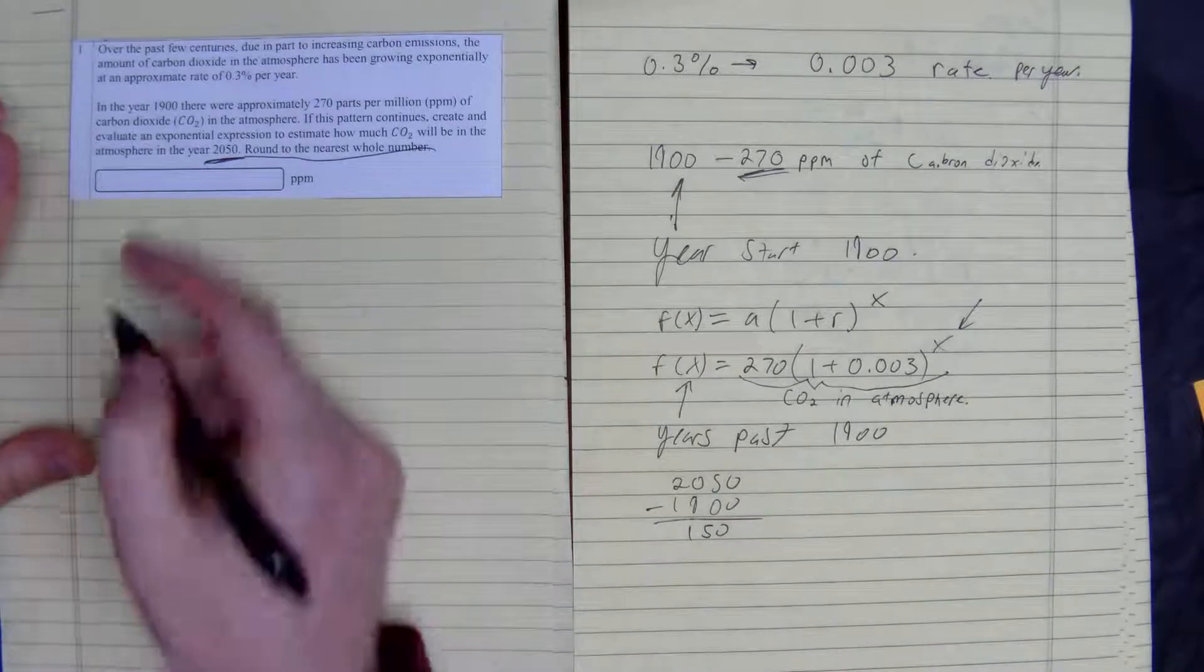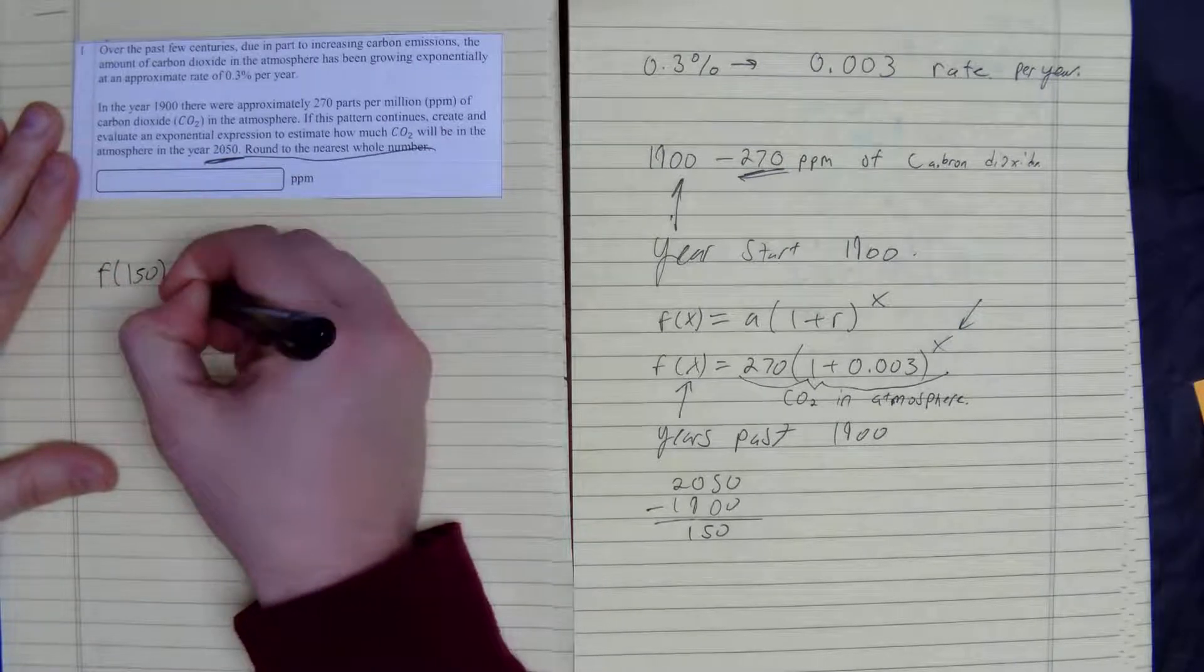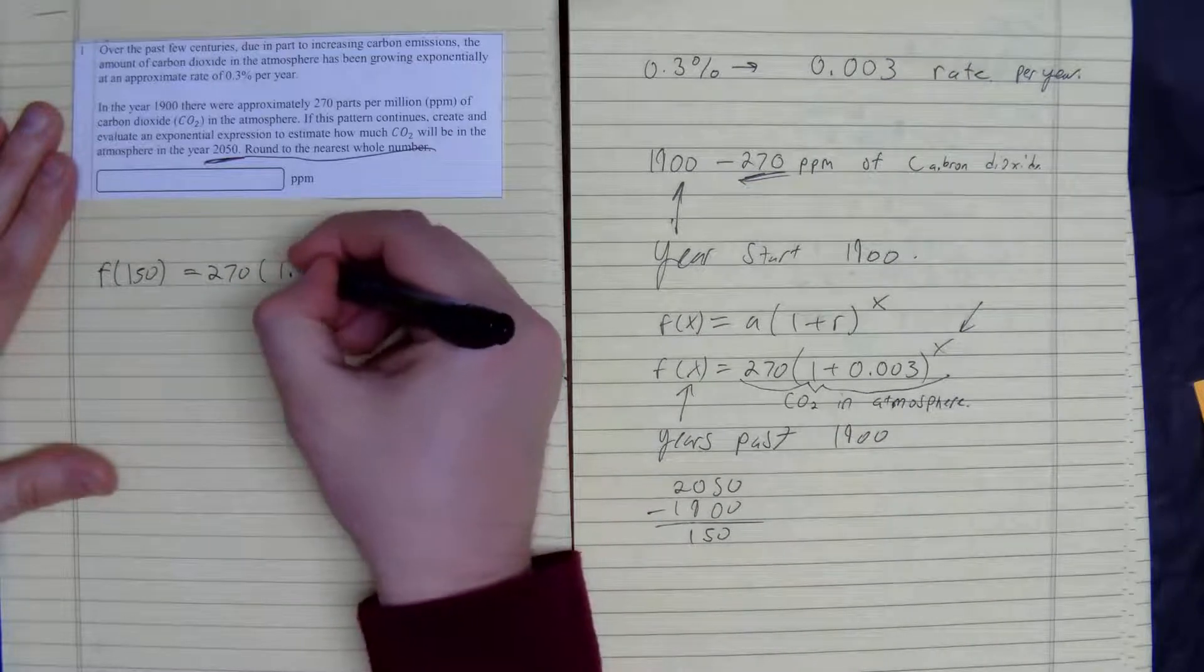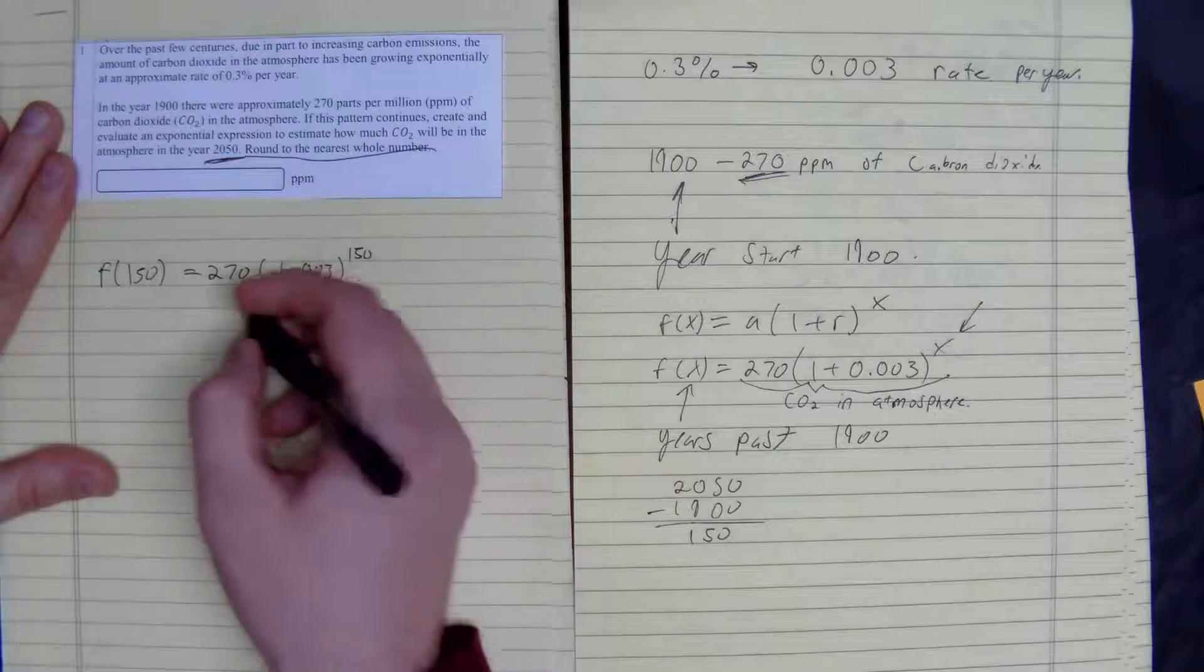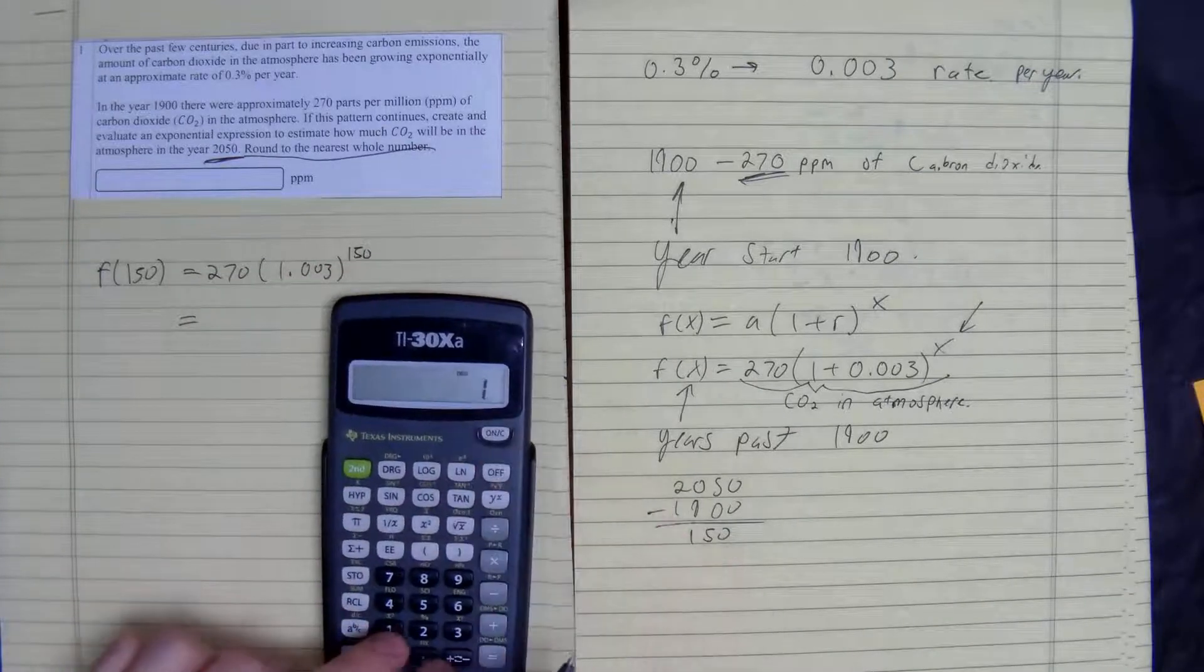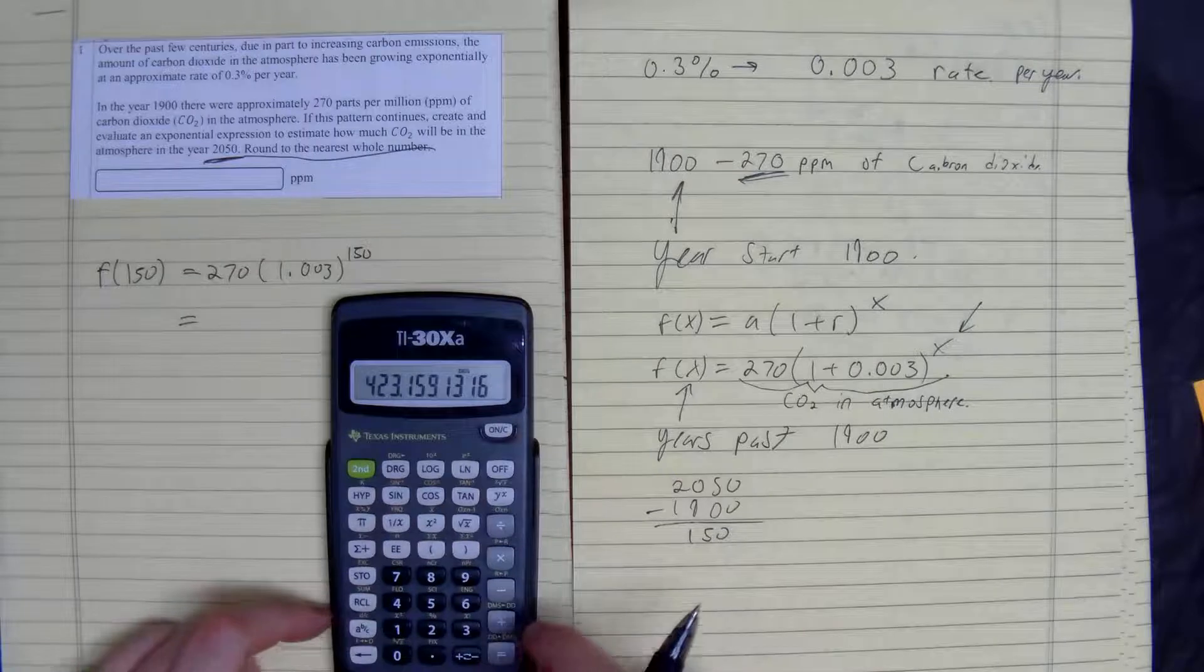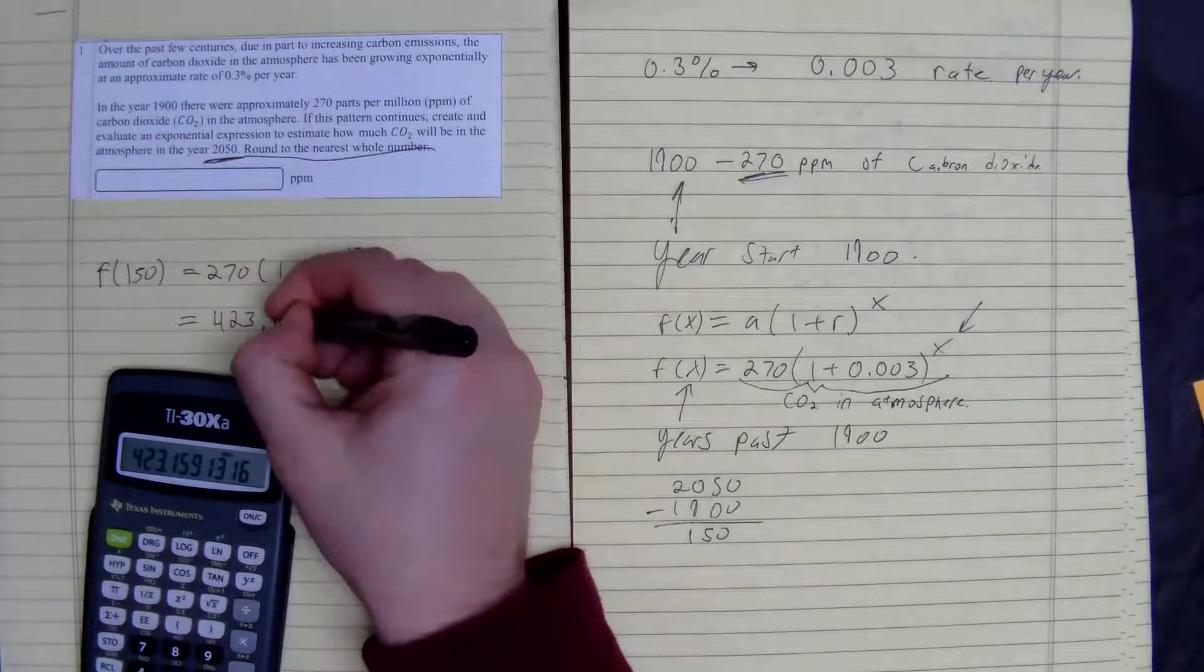F of 150 is equal to 270 times 1.003 to the power of 150. Do that in the calculator: 1.003 to the power of 150 times 270 equals 423.159.